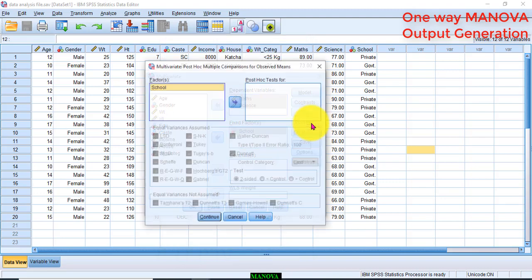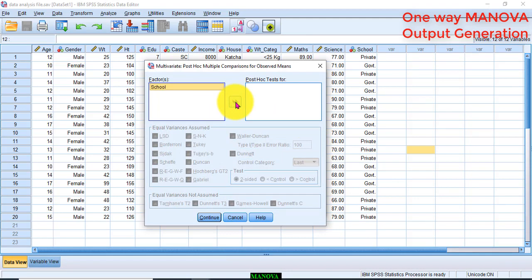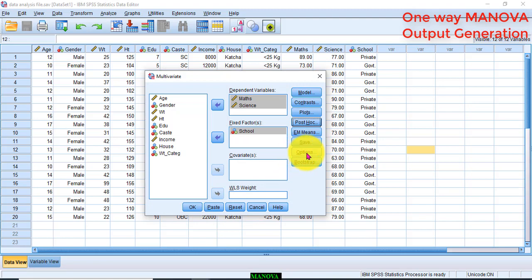Go to Post-hoc. You must remember that Post-hoc is used to check whether there are significant differences across the categories. So, after transferring, click Add. Continue.